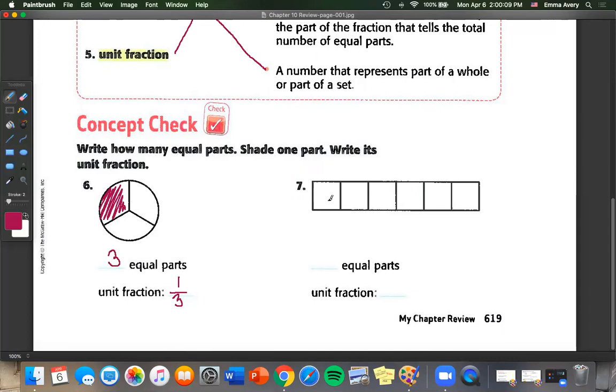Number seven, we have one, two, three, four, five, six equal parts. If I shade in just one of those, it's going to be one over six.